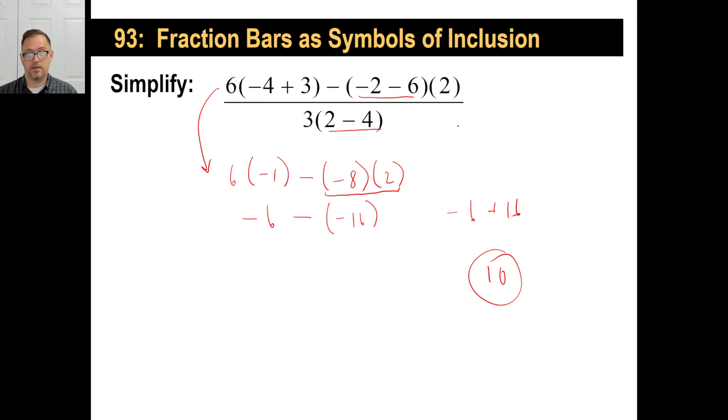Two minus four is negative two. Three times negative two is negative six. So the denominator is negative six. Now you could leave it like that if you wanted to. You could just put 10 over negative six. But if you wanted to go ahead and kind of make it look a little cleaner and like what is normally expressed,